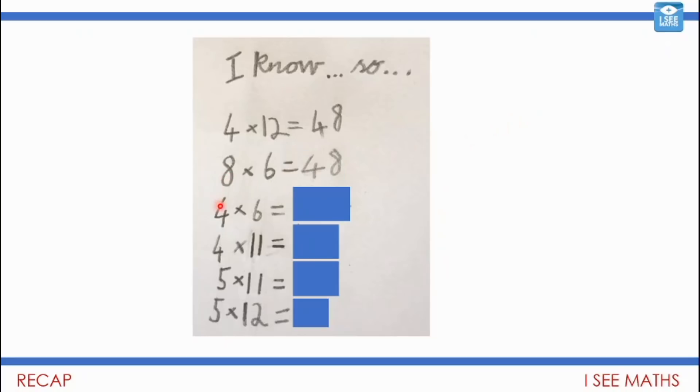Now 8 sixes becomes 4 sixes, it's half the number of sixes. We're still using sixes, but we've got half the number of sixes, so it'll be half, it'll be 24. Now what about 4 sixes to 4 elevens? That's an interesting one. It's still lots of 4 but now we have 5 more lots of 4. So I think that should be another 20 from 24 to 44. So 4 lots of 11 is 44.